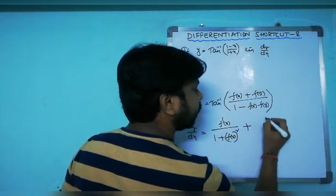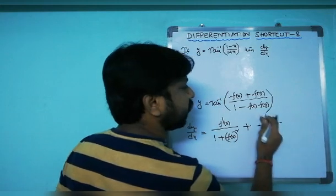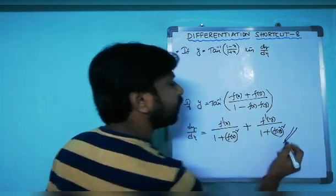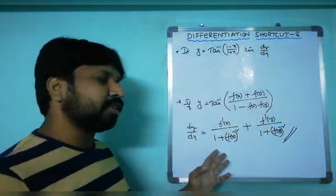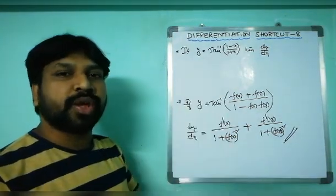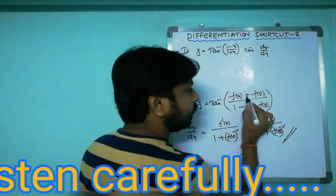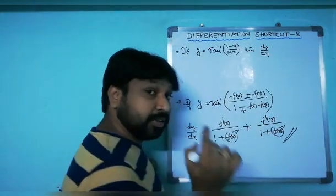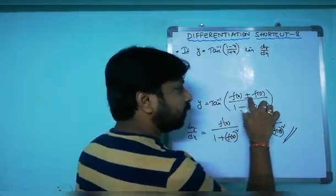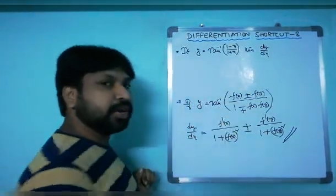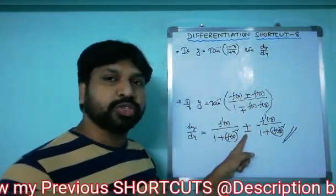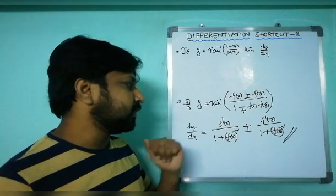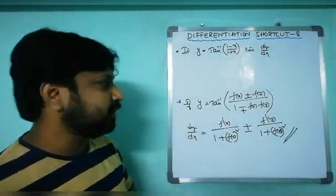Plus whatever f(y) is, differentiate with respect to y: f′(y) divided by (1 plus f(y) squared). That's your shortcut formula. One important point: if the numerator has a plus sign, the result is minus; if the numerator has a negative sign, the result becomes positive. Positive numerator gives positive in the formula; negative numerator gives a negative sign.